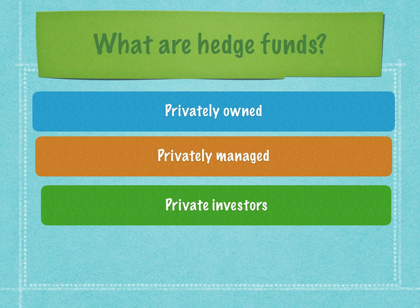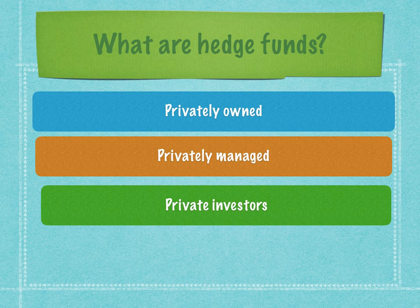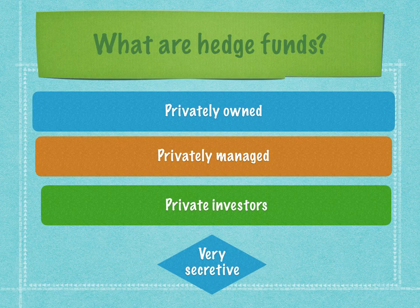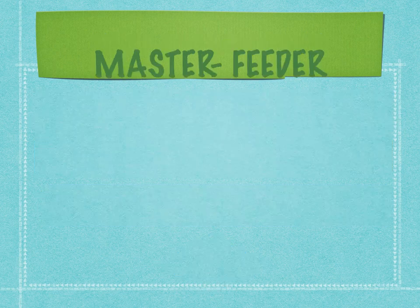Private investors such as high net worth individuals, ultra high net worth individuals, sports celebrities, film star celebrities, and unicorn founders all act as investors, with investments running into millions of dollars. Since all these aspects are private — investors, management, and ownership — the operations of the hedge fund are very secretive. Unlike mutual funds, which must report NAVs at the end of every working day, hedge funds don't have any such regulatory reporting requirements.